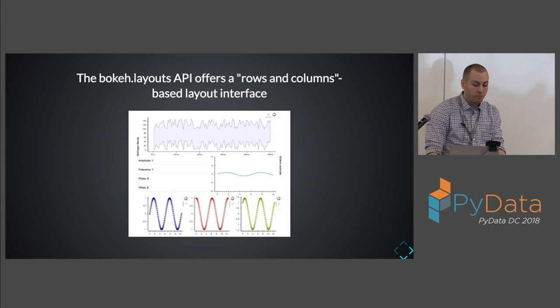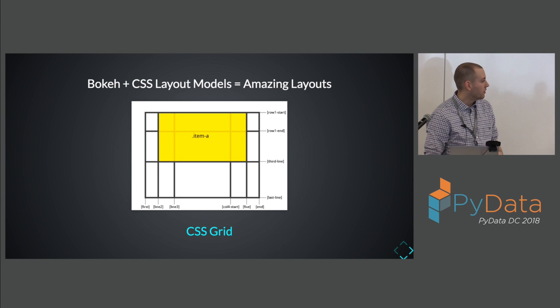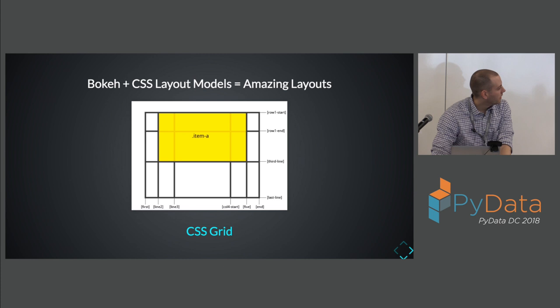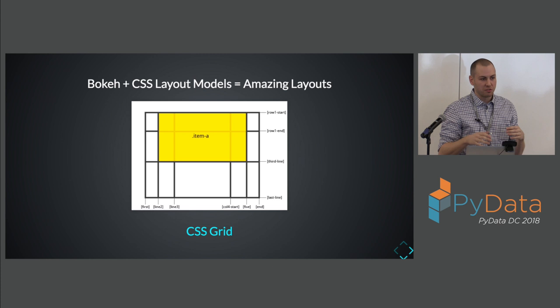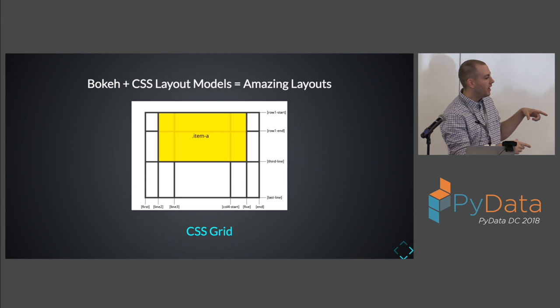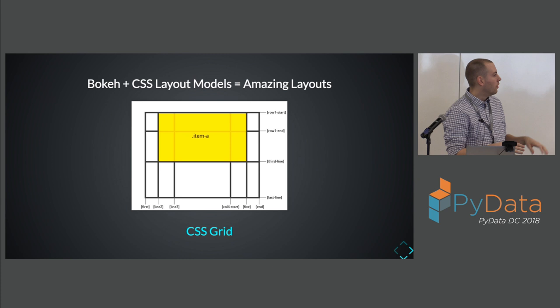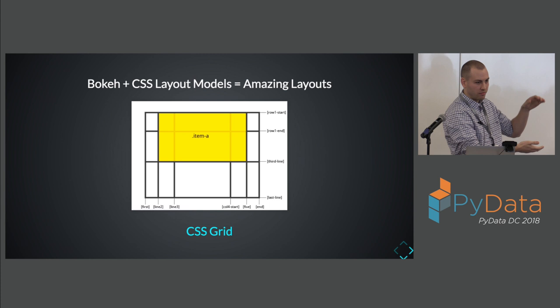Bokeh also allows embedding plots in your own Jinja templates. There's a new CSS layout engine called CSS Grid, which is amazing for dashboards — it's like the greatest tool of all time. It lets you split a container into arbitrary spaces, and when you put things inside it, you say: I want to start at this arbitrary line and end at this arbitrary line, both vertically and horizontally.